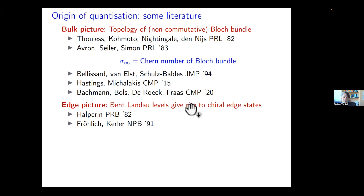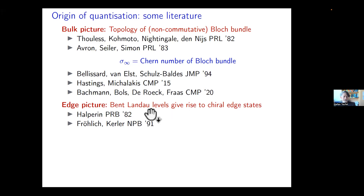On the edge side, a physics textbook picture is that edge states come from Landau levels which bend near the boundary: in the bulk the chemical potential sits between Landau levels, but at the edges the Landau levels pierce through the chemical potential, giving rise to chiral edge states traveling along the boundaries. This was first observed by Halperin, and Jörg Fröhlich and a collaborator developed a rather general theory starting from minimal assumptions on the microscopic model showing these chiral edge states arise very generally.